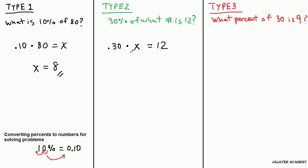So 30% times some number is 12, and in order to solve this now, once we've set it up, we just divide by 0.3 on both sides. We get rid of it here, and over here, we're left with x equals 40.